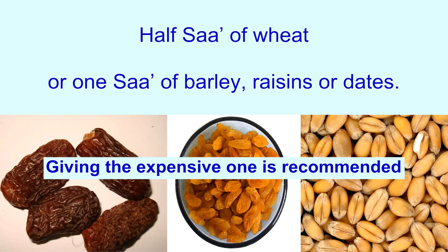If you have more, you are supposed to give the most expensive thing. Dates, raisins, and barley each have different types and categories, so give the most expensive if you have more. This is something which Ali radiyallahu anhu advised the sahaba — he said: 'Amma idha awsa'allahu fa awsi'u' — when Allah subhanahu wa ta'ala has extended His blessings upon you, then you should also extend and spend more in the way of Allah. Assalamu alaikum wa rahmatullahi wa barakatuh.